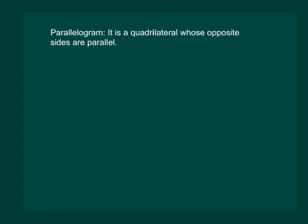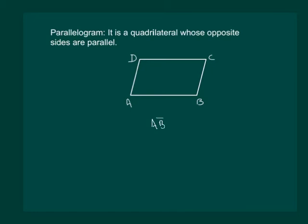We define another type of quadrilateral called parallelogram. It is a quadrilateral whose opposite sides are parallel. Looking at the diagram, line segment AB is parallel to DC, and similarly BC is parallel to AD.